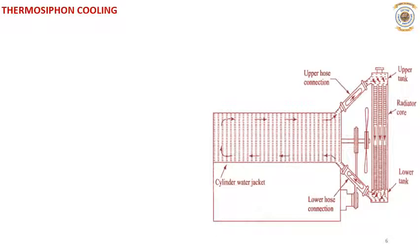Thermosiphon cooling — this is the line diagram of thermosiphon cooling. The basis of this type of cooling is the fact that water becomes lighter on heating. The figure shows the thermosiphon cooling arrangement where the top of the radiator is connected to the top of the water jacket by a pipe, and the bottom of the radiator to the bottom of the water jacket, via upper and lower hose connections. Water travels down the radiator, across which air is passed to cool it. The airflow can take place due to vehicle motion, or a fan can be provided.